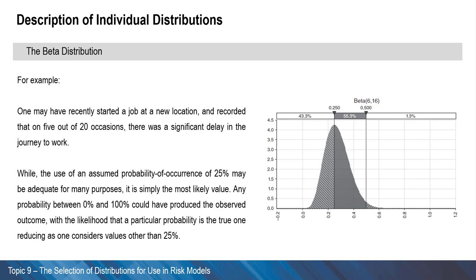Is the probability of delay exactly 25% or could there be some uncertainty around that? While the use of an assumed probability of occurrence of 25% may be adequate for many purposes, it is simply the most likely value.